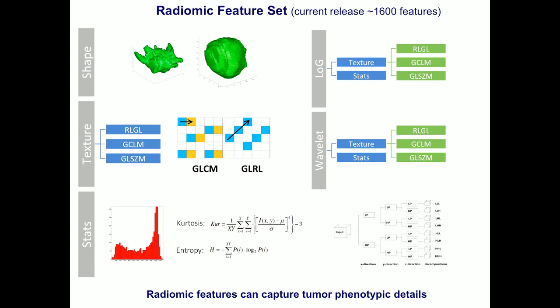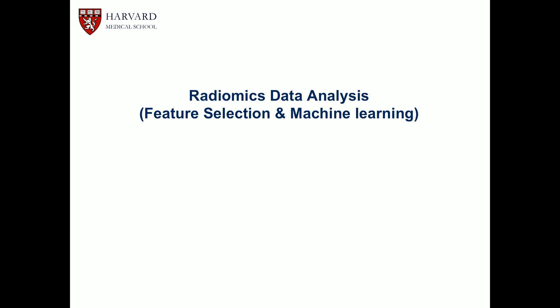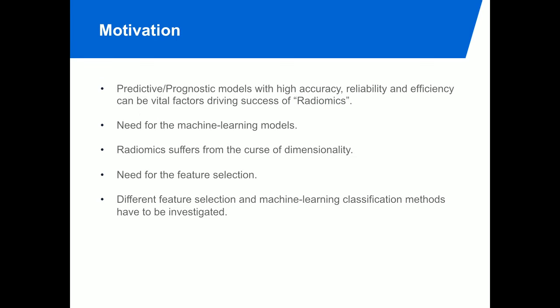All in all, we now have 1,600 different features in the current release — many are very redundant, but also many are very informative. Once we have all these features, we have to define a robust analysis: feature selection and machine learning. We really believe these are the driving factors for the success of radiomics. Radiomics suffers from the curse of dimensionality — a lot of data for often a limited number of samples — so we need feature selection and different machine learning classification methods.